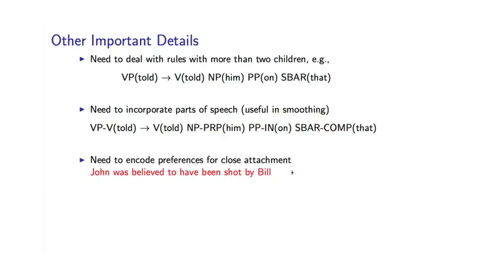Another thing is that you need to modify these grammars to encode preferences for close attachment. So coming back to this example, John was believed to have been shot by Bill, it's much more likely for by to attach to shot rather than believed. And we still haven't really addressed that problem. But there are modifications to lexicalized PCFGs which will allow us to learn those kind of preferences and they are also very useful.